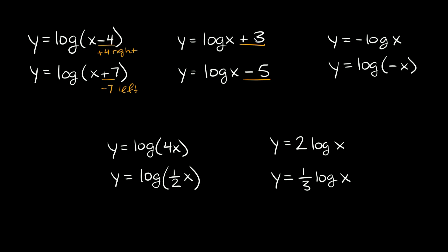So those are horizontal and vertical translations. What about reflections? Here we have y equals negative log x. If you ever have a negative symbol out in front of your function, then this indicates a reflection across the x-axis.